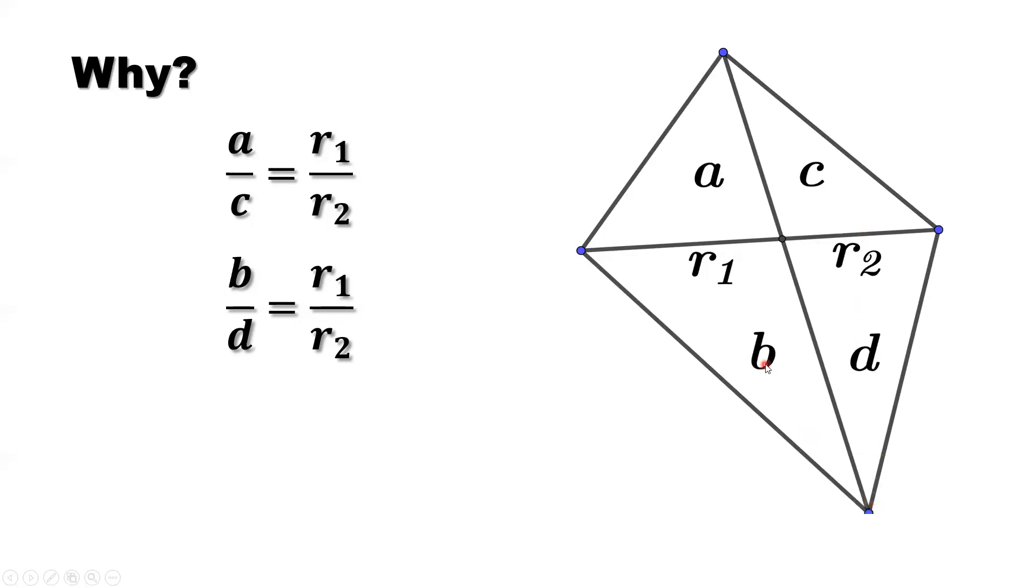So the area of this part equals r1 times height. The bottom, that's r2 times height, that's d. Same height, cancel each other. Then we only have r1 over r2.